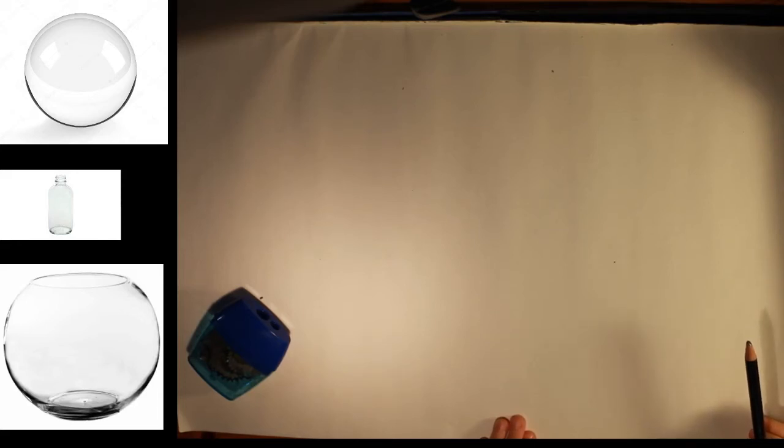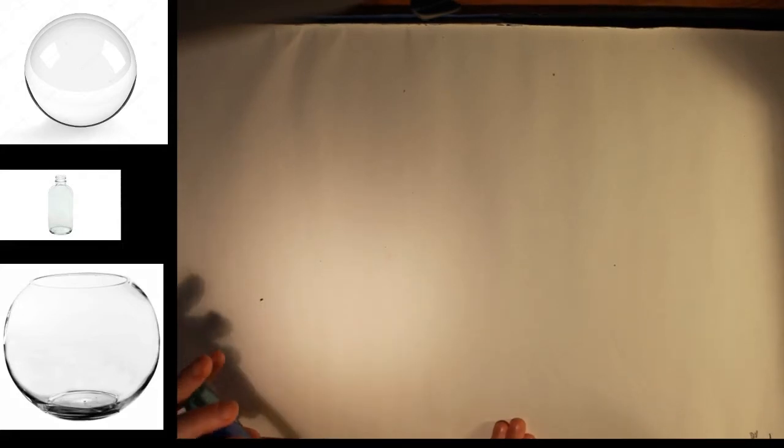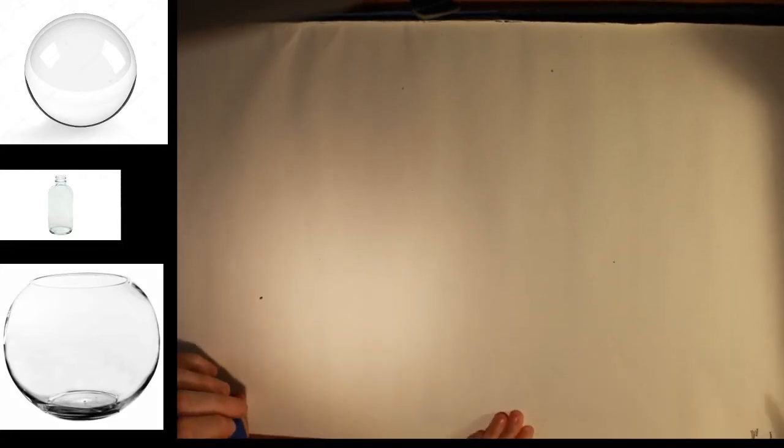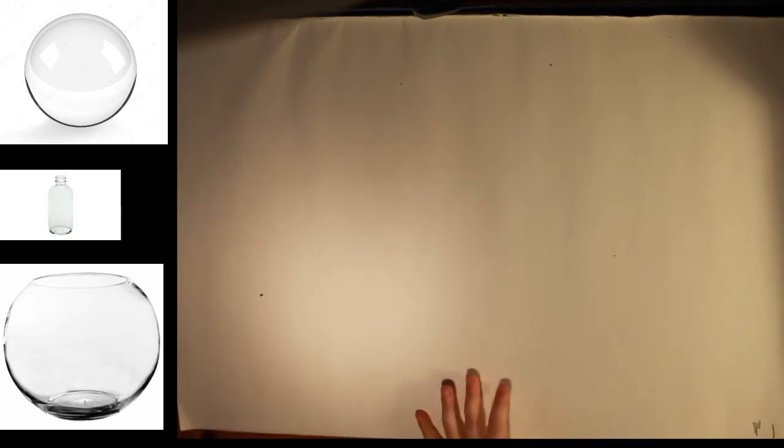Hello and welcome to art class today. Today we're going to be drawing glass things. You can see the pictures on the left. There's a glass bowl at the bottom, that's kind of a fish bowl. And there's like a little glass bottle. And then the top one is a glass sphere, like a glass ball.